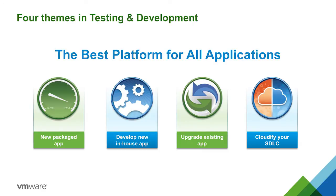Third, upgrading existing applications. As I mentioned, 70% of infrastructure is set aside for test and dev. What if I don't have to reserve that capacity? Because even for things like upgrades, I can make copies, push them out to vCloud Air, do my update, and bring them back in-house. And finally, cloudifying your software development lifecycle — creating a true DevOps environment using tools like Puppet or Chef, or our own tools like the vRealize suite, and introducing cloud as an endpoint to do your test and dev, and without making any changes, be able to roll it onto vSphere — because of that same underlying platform.